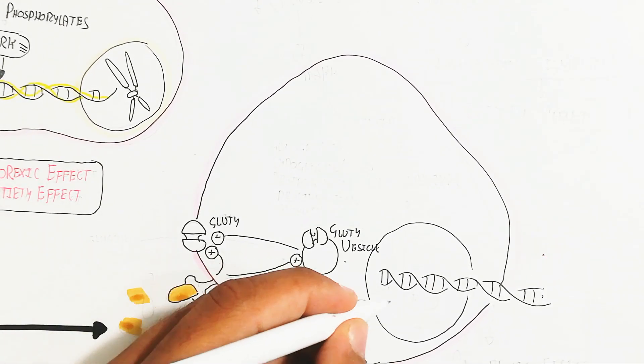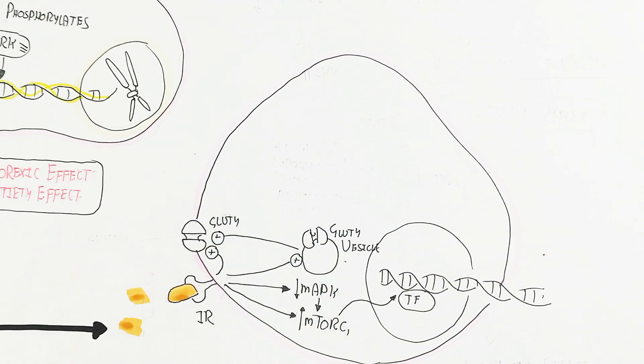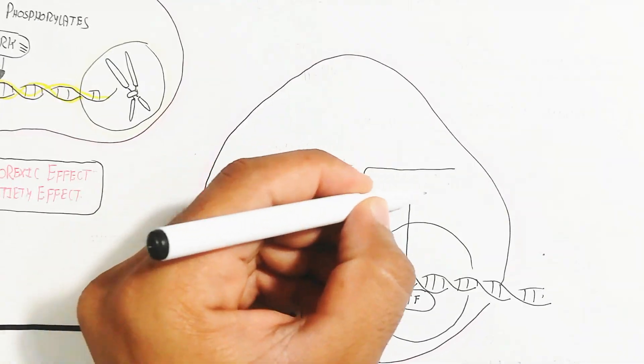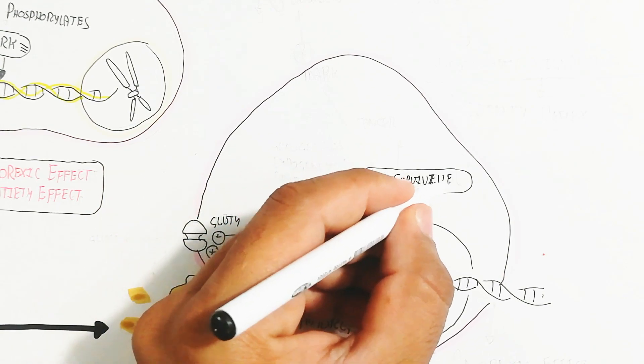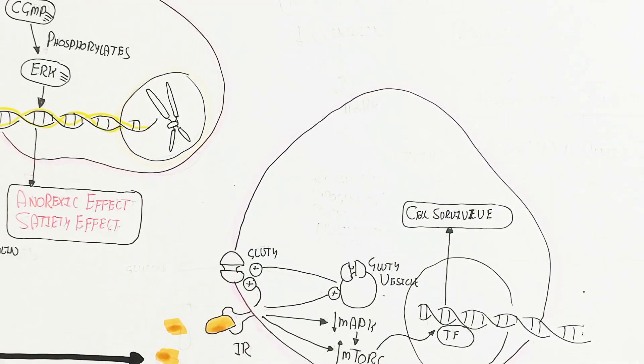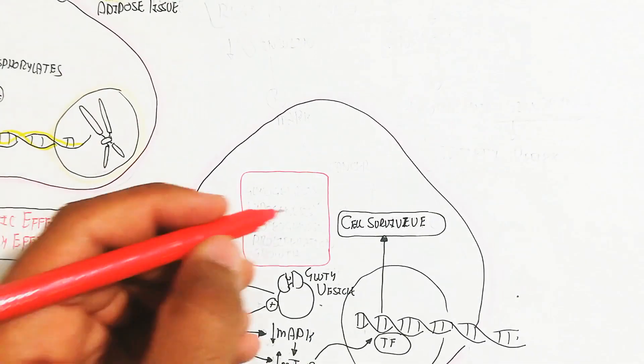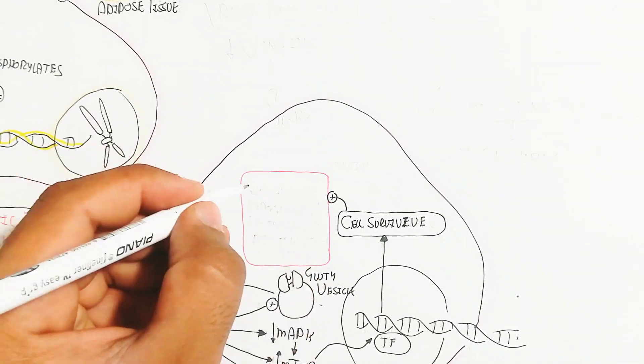This also leads to MAP kinase inhibition, but mTOR C1 will be activated, leading to transcription factor activation. DNA gene activation is used for cell survival and cancer progression whenever in the fed state.